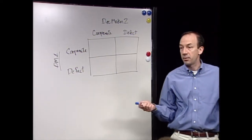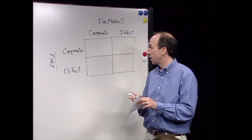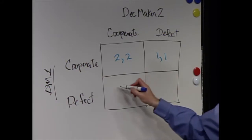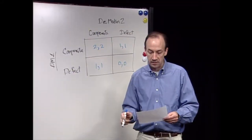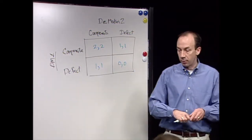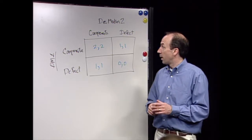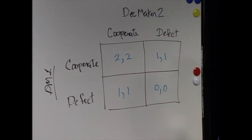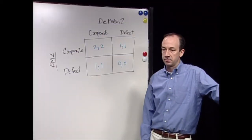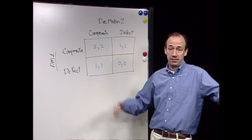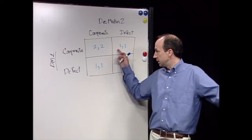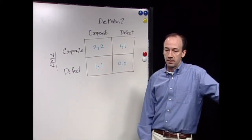So we've got a two-by-two description of the game, with separate payoffs to each of the individual decision makers. In this first game, the payoff structure is: if they both cooperate, they each get 2; if one cooperates and the other defects, they each get 1; if they both defect, they get 0. The first number is what decision maker one gets, and the second number is what decision maker two gets. If they both cooperate, they get the best they can get.